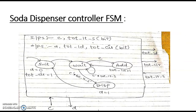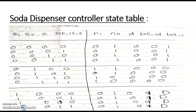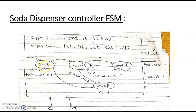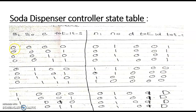Now, what we are doing — we have to represent this thing. We will convert this into the truth table, which is called the state table with the present state and the next state. We are encoding the states: initial state is 00, wait state is 01, add state is 10, and dispense state is 11. We are using two bits because we have four states.